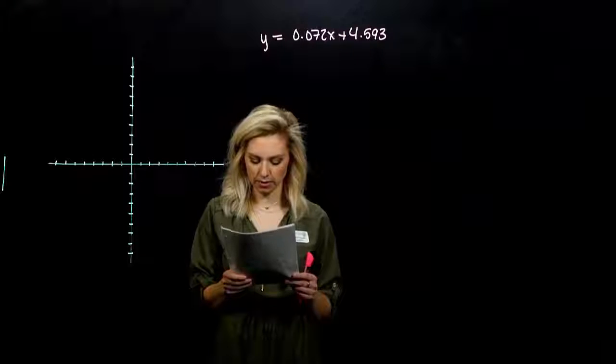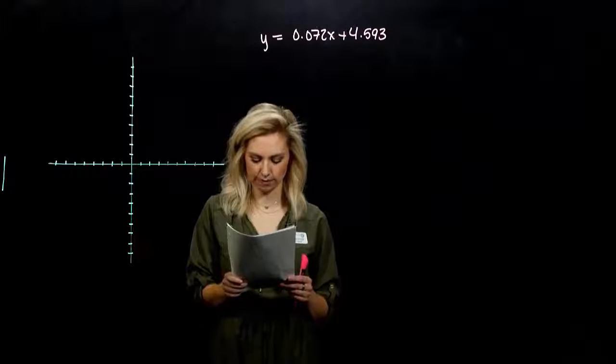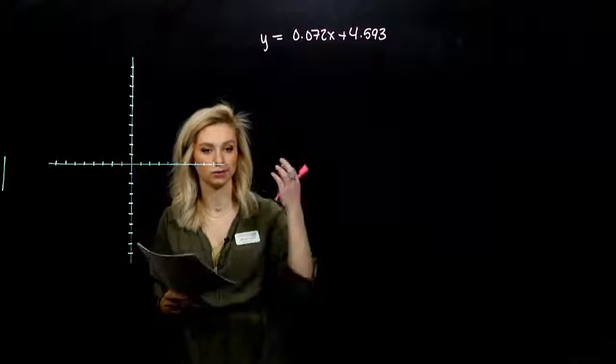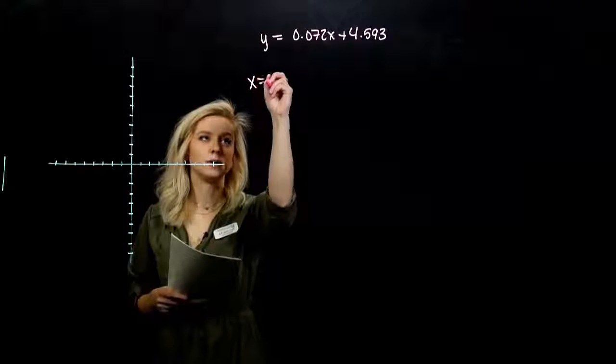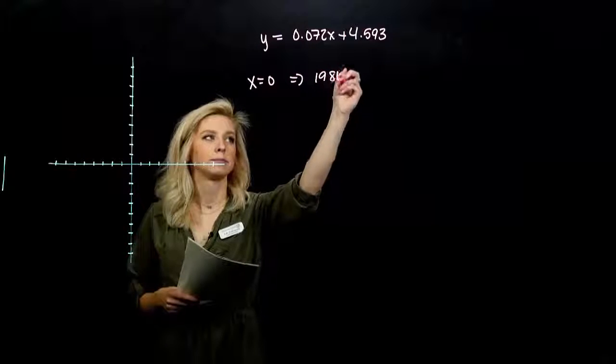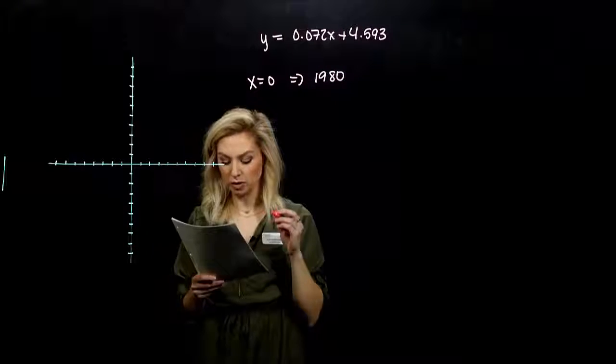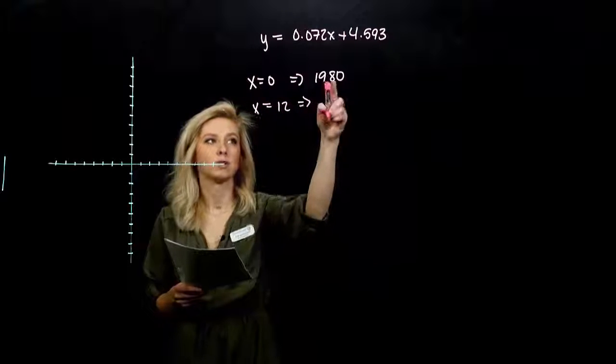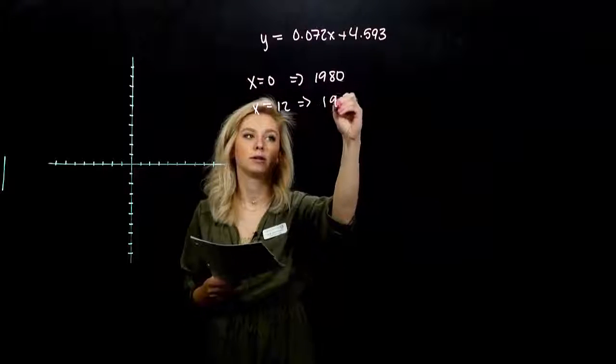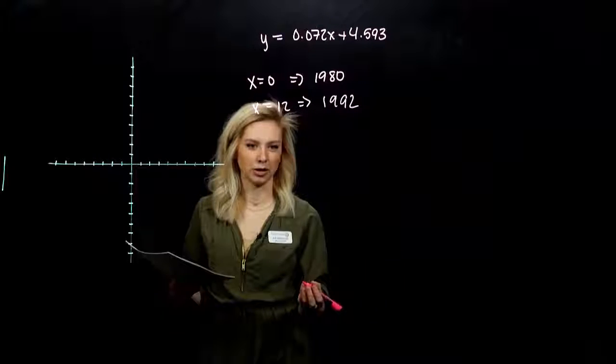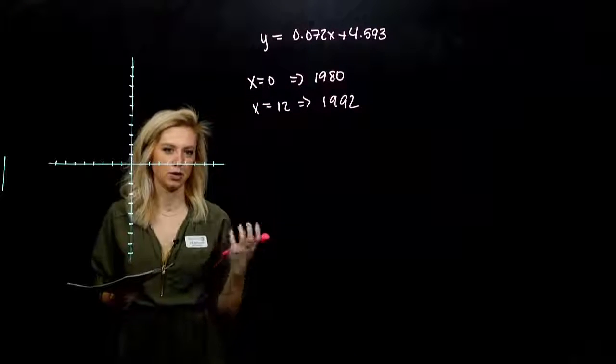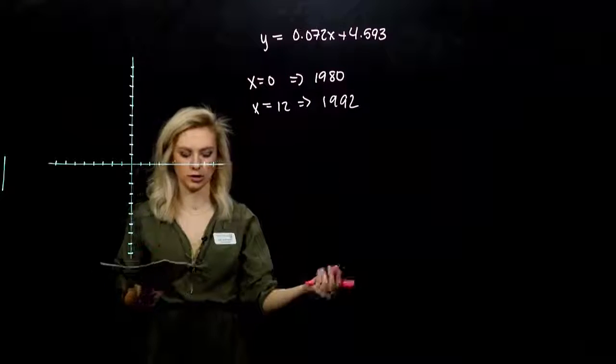X is the number of years since 1980. So x equal to 0 corresponds to what year? X equal to 0 means I'm looking at 1980. X equal to 12 corresponds to what year? 12 years after 1980, 1992, you get the picture. The first part of these kinds of problems is determining what x value is associated to what year.